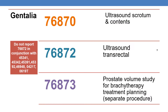Now coming to the diagnostic ultrasound codes for genitalia. Code 76870 is ultrasound scrotum and contents. Code 76872 is ultrasound transrectal. Code 76873 is prostate volume study for brachytherapy treatment planning, separate procedure. Do not report 76872 in conjunction with codes 45341, 45342, 45391, 45392, 46948, 0421T, or 0619T — these are the contradictory codes that should not be reported along with 76872.